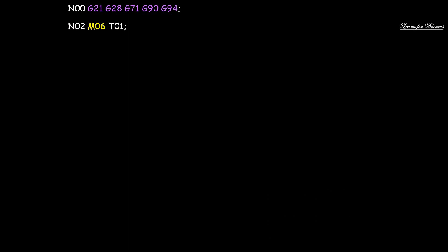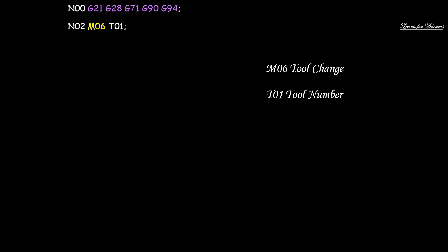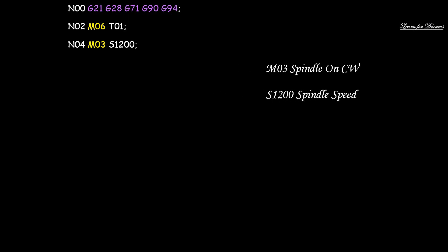Then N02: M06, T01 - here M06 is tool change and T01 is tool number. Next, N04: M03, S1200 - M03 is spindle on in clockwise direction and S1200 is spindle speed in RPM. Then N06: M08 - M08 is coolant on.